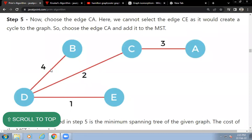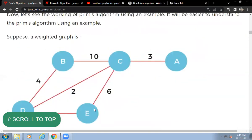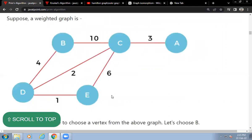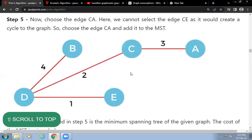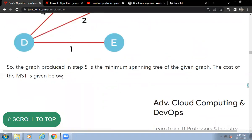We have edges with costs 4, 2, 1. Now from E, we look at the adjacent edges. The minimum available is E to C with cost 3. So the minimum cost is 4 plus 2 plus 1 plus 3, which equals 10 units. This is the cost of the minimum spanning tree.